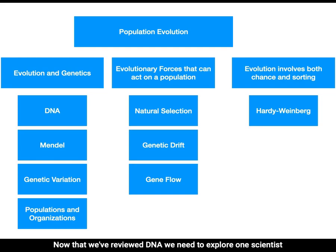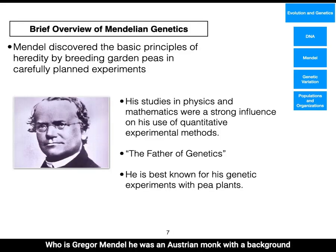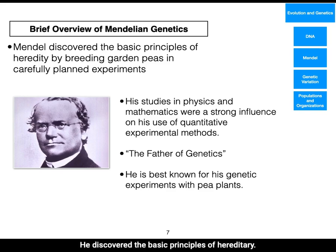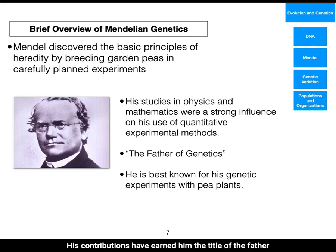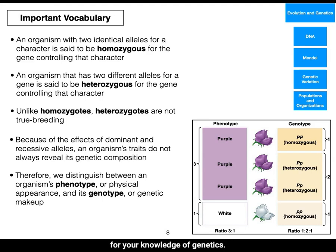Now that we've reviewed DNA, we need to explore one scientist's contribution to our understanding of genetics so we can better understand evolution genetics. Who is Gregor Mendel? He was an Austrian monk with a background in physics and mathematics. However, he is best known for his genetic experiments with pea plants. With these experiments, he discovered the basic principles of heredity. His contributions have earned him the title of the father of genetics.